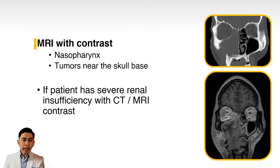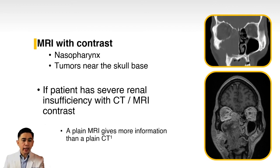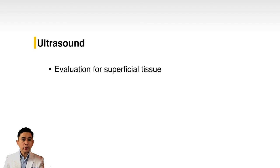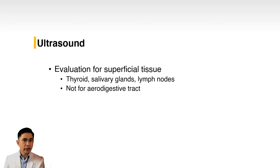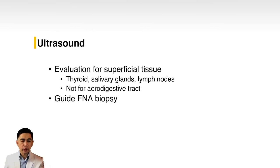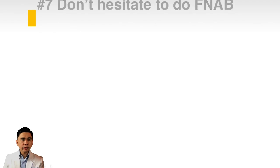For patients with severe renal insufficiency where CT or MRI contrast is contraindicated, it is better to request a plain MRI rather than a plain CT, because a plain CT will not give you additional information. Ultrasound is primarily used to evaluate superficial tissues and is very useful in evaluating the thyroid, salivary glands, and lymph nodes; however, it does not assess the aerodigestive tract. Another use for ultrasound is to guide fine needle aspiration biopsy.